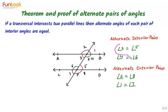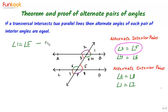Let's discuss the approach for proving that alternate interior angles are equal. First, let us pick angle 3 and angle 5. We have to prove them equal. We will identify a pair of corresponding angles which includes either angle 3 or angle 5 — that pair can be angle 1 and angle 5. So angle 1 is equal to angle 5 by the corresponding angle axiom. This is equation 1. And we know that vertically opposite angles are equal, so angle 1 is equal to angle 3. This is equation 2. From equations 1 and 2, we can say that angle 3 is equal to angle 5.